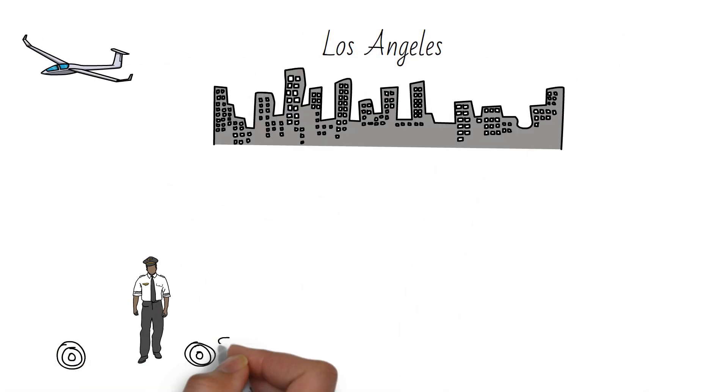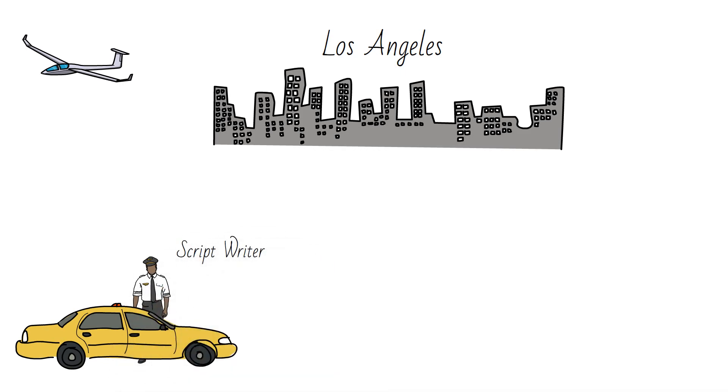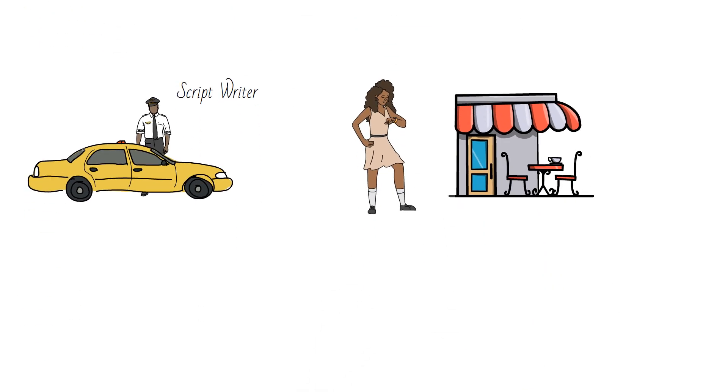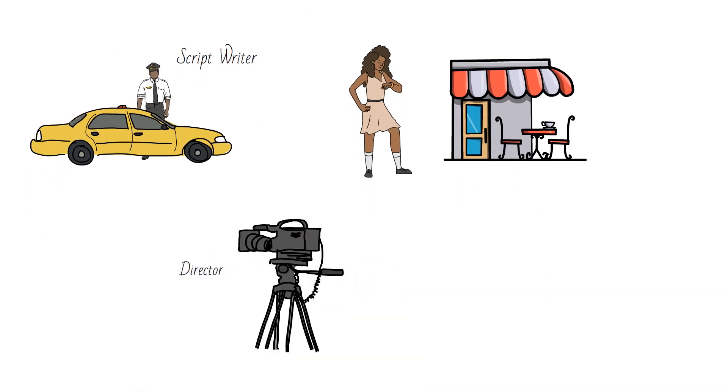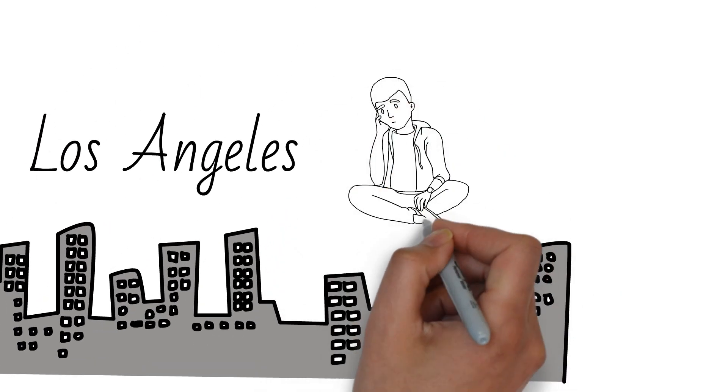To understand this, you can visit Los Angeles. Ask a cab driver what they do, and they might say they're a screenwriter working on an exciting movie plot. Even waitresses might say they're actresses and interns might call themselves directors. In Los Angeles, people talk about their aspirations rather than just their current jobs.